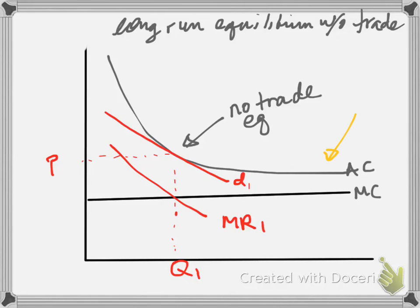They all have the same cost structure and face the same market demand, but each one of them faces a more elastic individual demand because their product is different from other competitors' products. Each firm has an average cost curve, a marginal cost curve, and each firm confronts a downward sloping elastic demand curve. The firm sets marginal cost equal to marginal revenue, which determines the production quantity Q1.